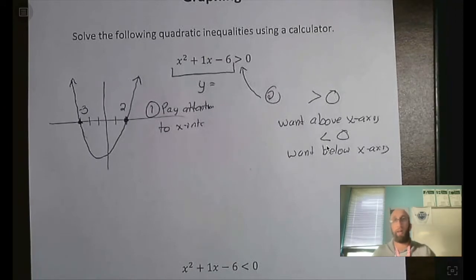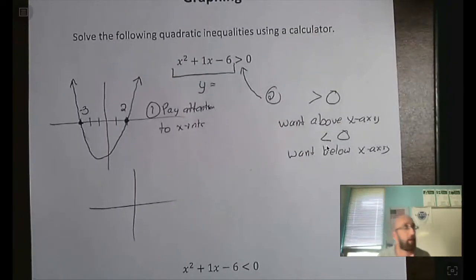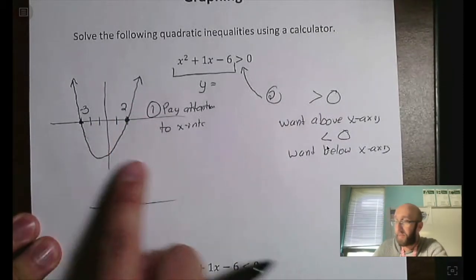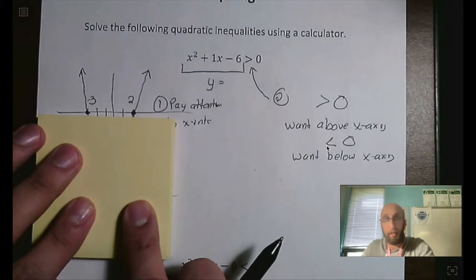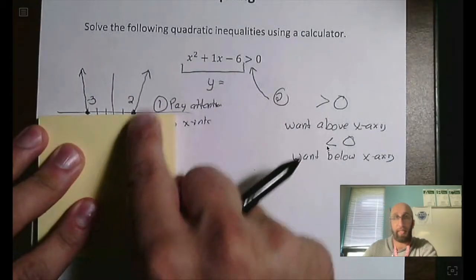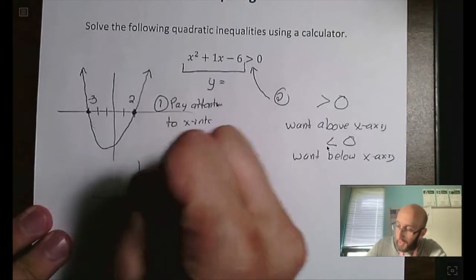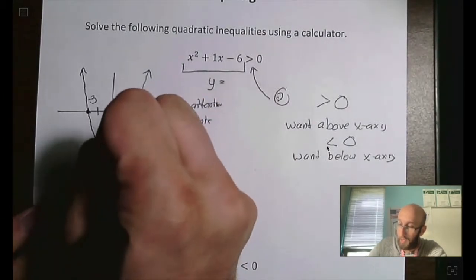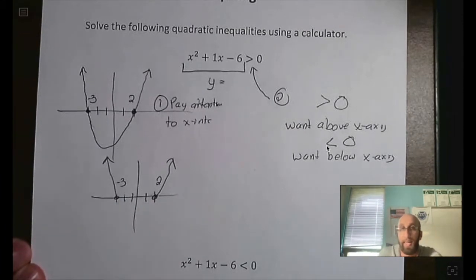So what we're going to do is take this graph and identify the parts that are above the x-axis — we only want those pieces. Looking at the original graph, we want the piece to the left and the piece to the right — both are above the x-axis. So we're still looking at our intercepts at 2 and negative 3, and we need to identify those pieces.